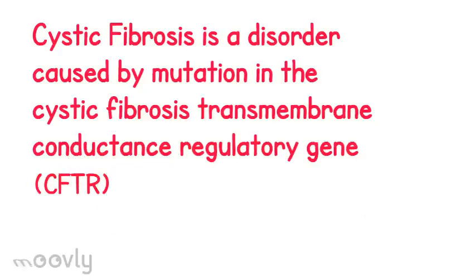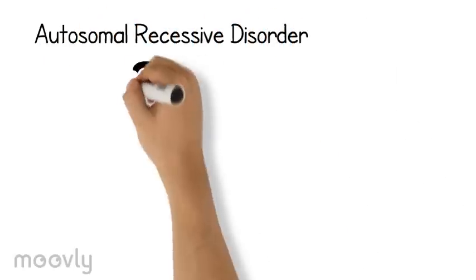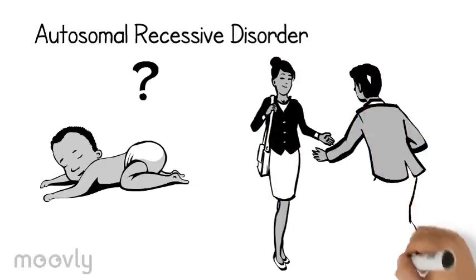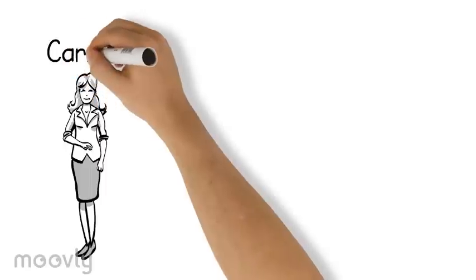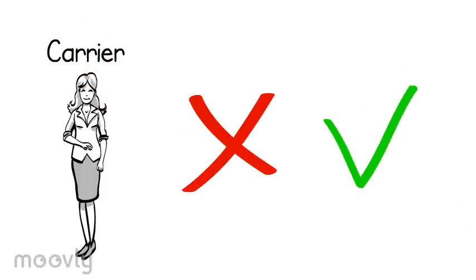This mutation occurs on chromosome 7. This disease is an autosomal recessive disorder, which means that the disease is inherited when a child inherits a defective copy of the gene from both parents who are carriers of the gene. A carrier is an individual who has a defective copy and a normal copy of a gene and is unaffected themselves.